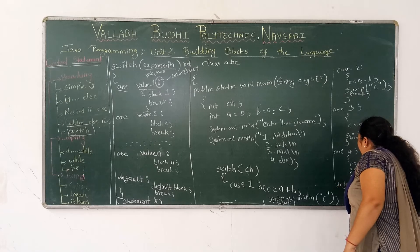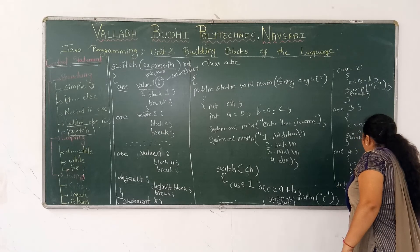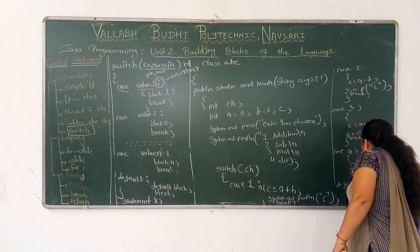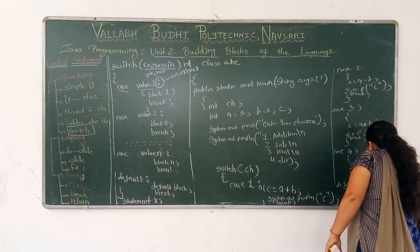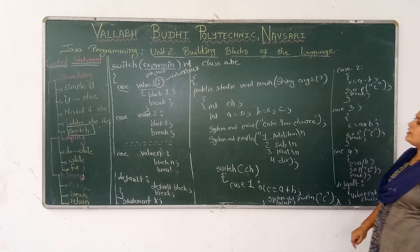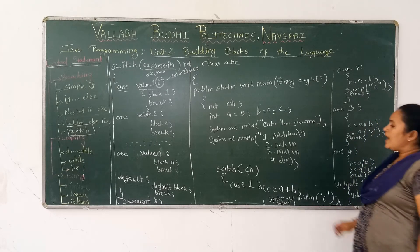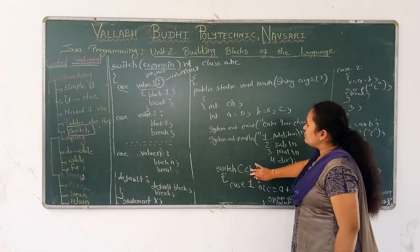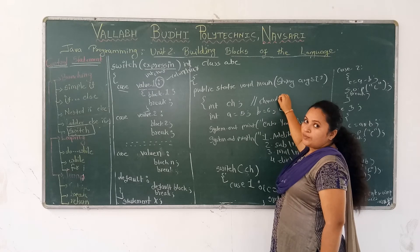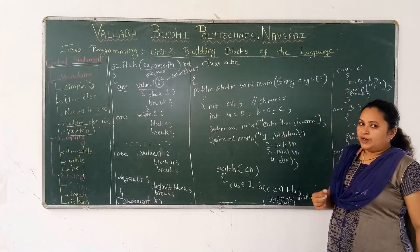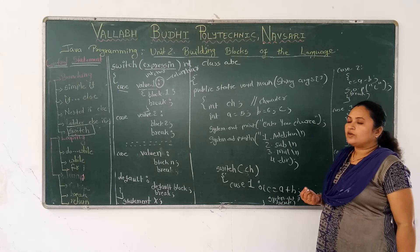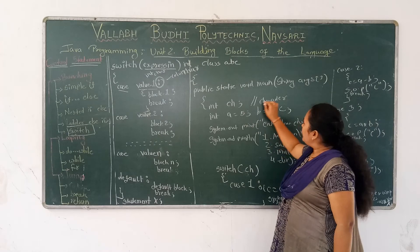The last case is the default case. If the user enters a wrong choice, we print 'You have entered a wrong choice.' Regarding the switch expression data types: integer values are allowed, single character values are allowed, but float, double, and string values are not allowed in the switch expression. If you use a character, you write it as a single character value — for example, char ch.